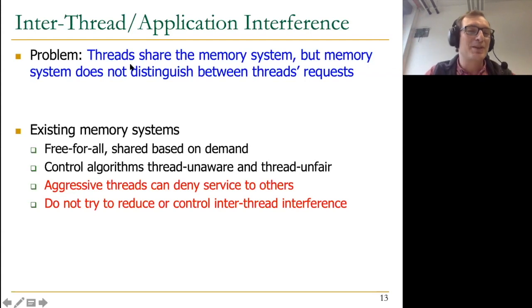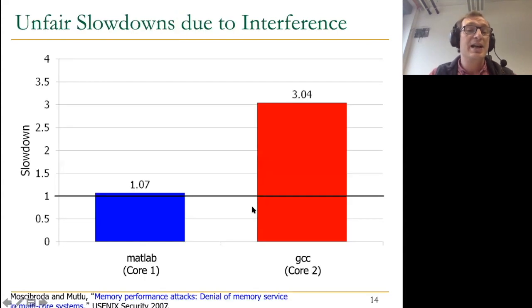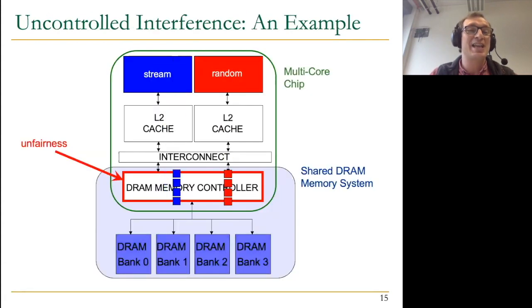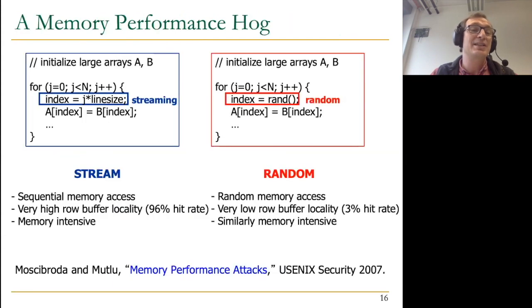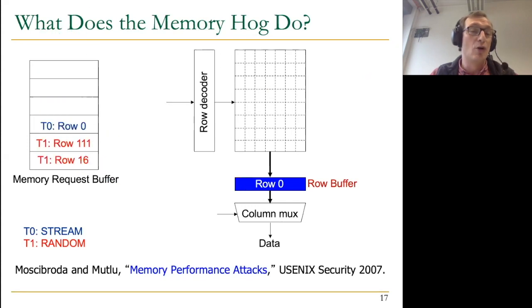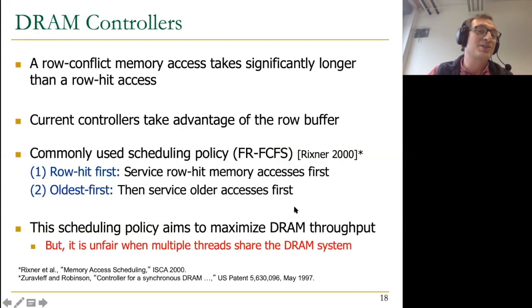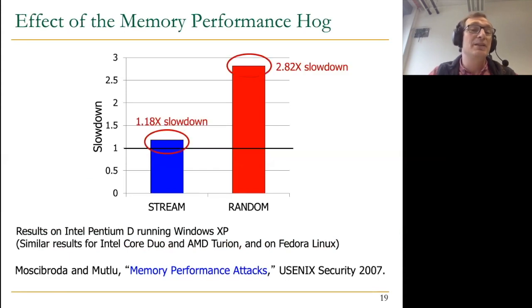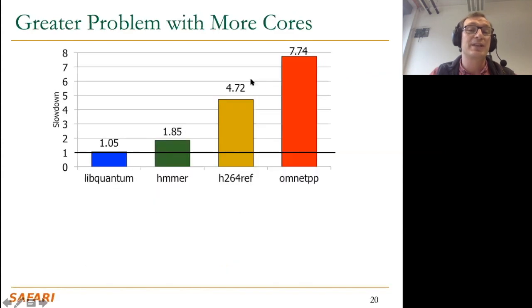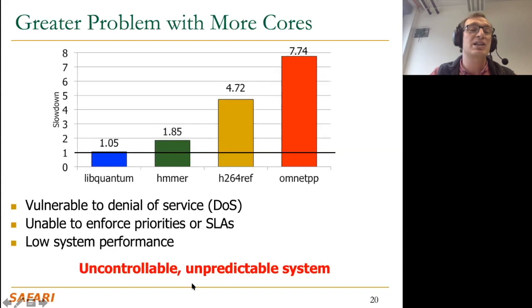At the time these slides were written, existing memory systems were completely free for all — shared based on demand. Control algorithms were thread-unaware. As a result, aggressive threads denied service to others, because existing systems didn't control or reduce inter-thread interference. You already know the example of memory performance attacks from a previous lecture. If you have uncontrolled interference, you can write memory performance hogs that hog the row buffer or a bank versus some other thread. These real performance hogs can slow down other applications, and this becomes a greater problem with more cores.